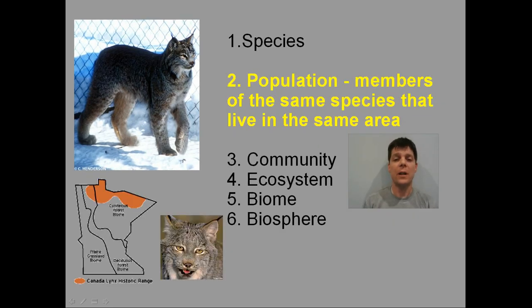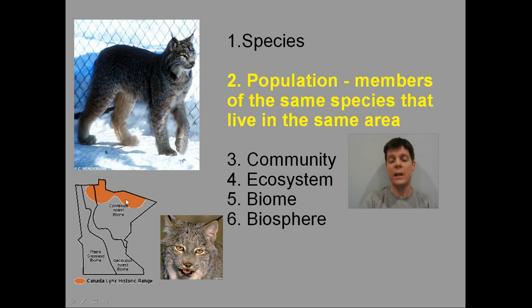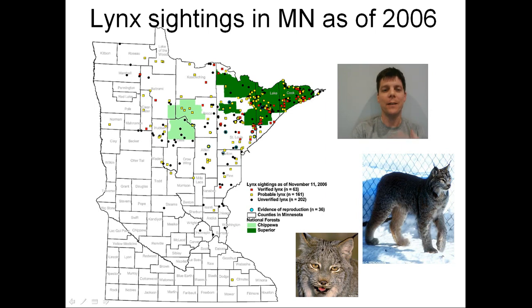Our next level of organization is population. With species we would be talking about one individual. Population refers to members of the same species that live in a defined area. Using the Canada lynx example, if we consider my home state of Minnesota, we have the historic range of the Canada lynx shown in the very northern part of the state shaded in orange. The lynx sightings in Minnesota as of 2006 are really focused in the northern part of the state — most of them in the Arrowhead region.